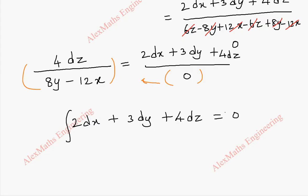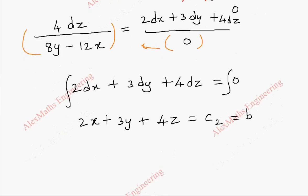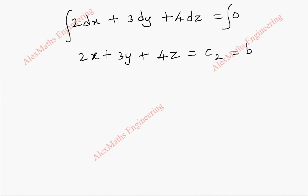On integration of both sides, 2 dx plus 3 dy plus 4 dz equal to 0 gives 2x plus 3y plus 4z equal to the integration constant c2. We shall name this constant b, since we have already named the first constant a.